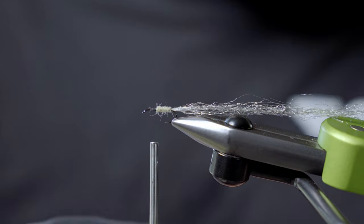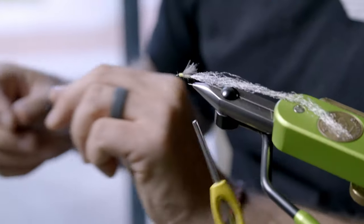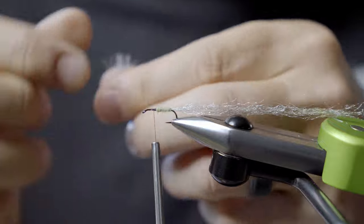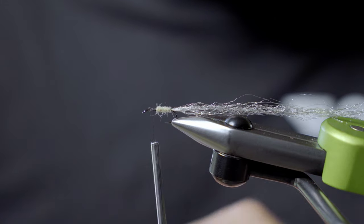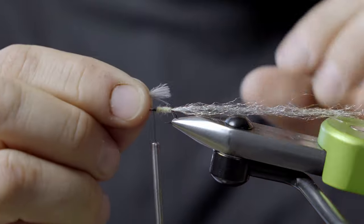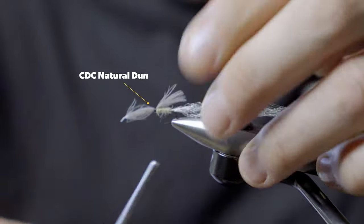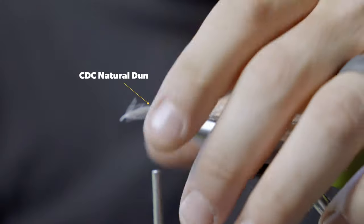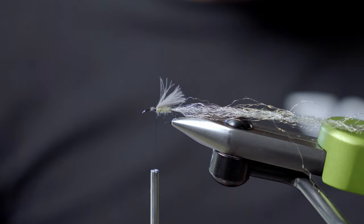I'm going to take the first insertion of some CDC. This is just natural dun. I'm going to take a feather like this, and I'm not an artist when it comes to CDC or dry flies, so I kind of just lay it in there, give it a nice little tuft, trim the excess and leave it.